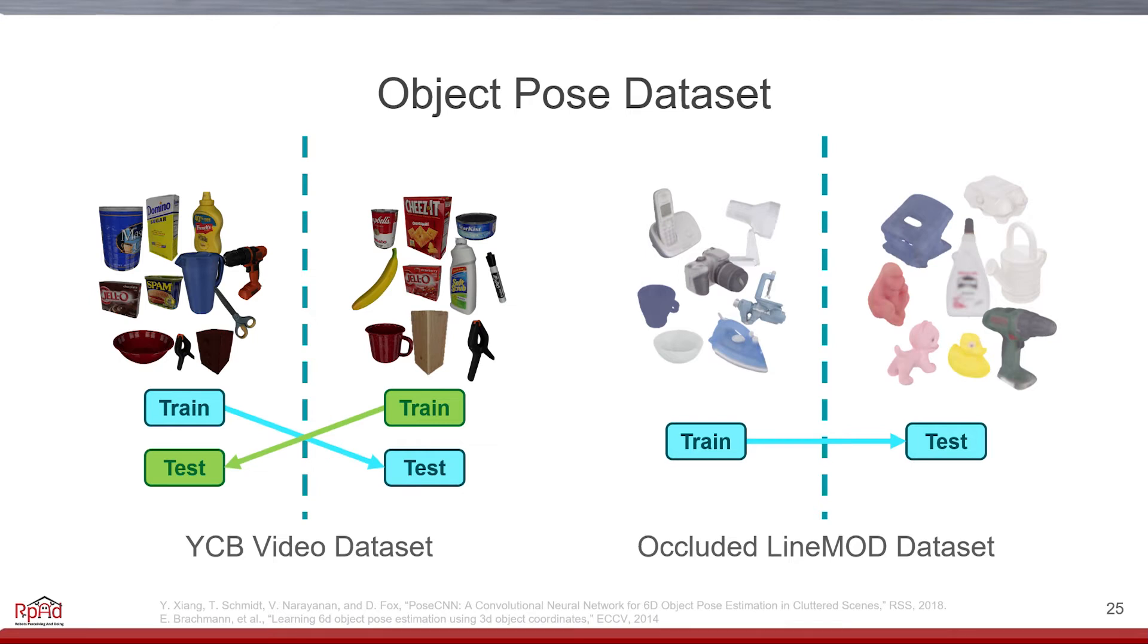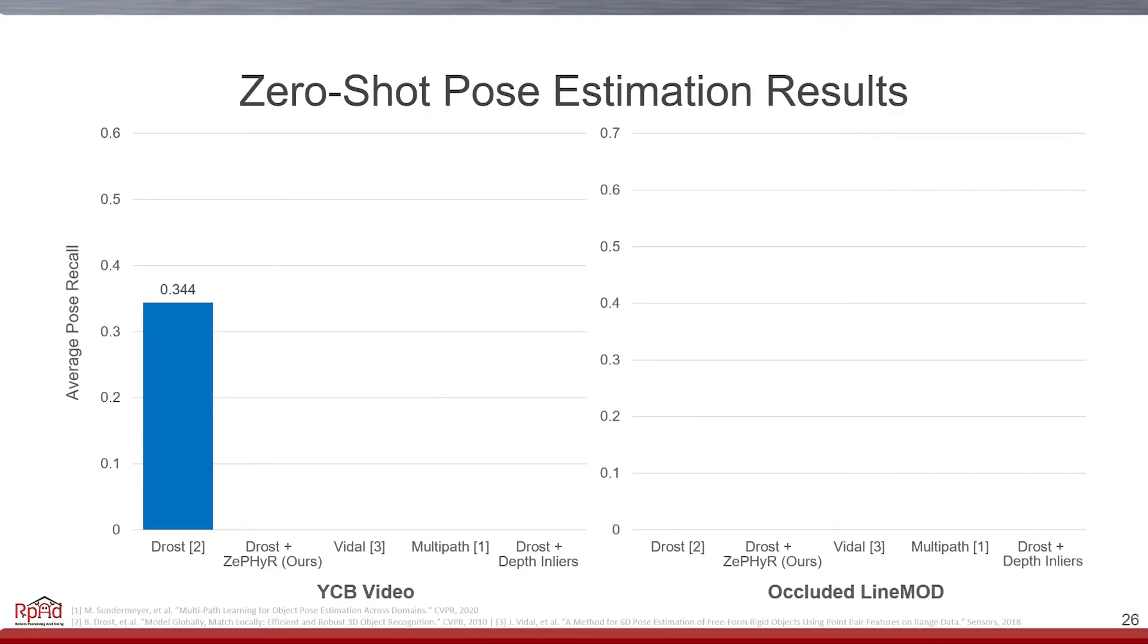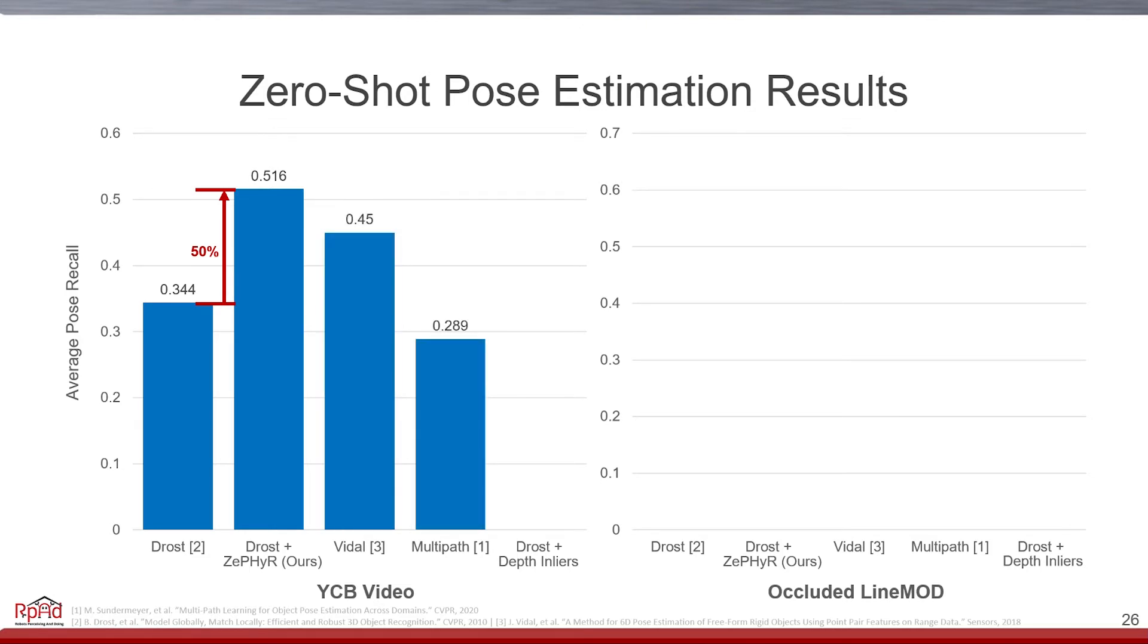The standard point pair feature method, proposed by Drost et al., can achieve adequate results. But when applying our scoring function to their estimated pose, we achieve a 50% improvement on unseen YCB objects. This outperforms other zero-shot methods on this dataset. While Waddell et al. produces similar results based on the point pair features, their implementation has not been released.